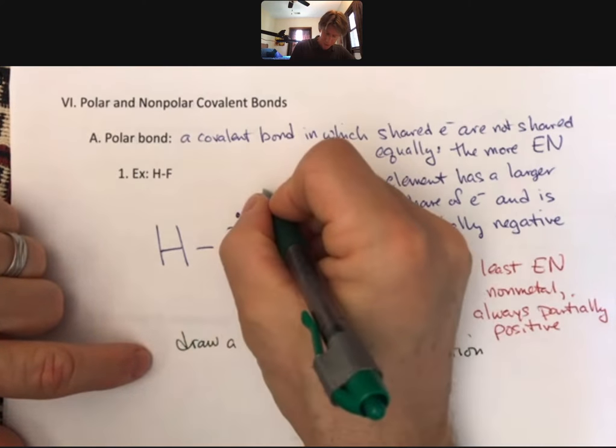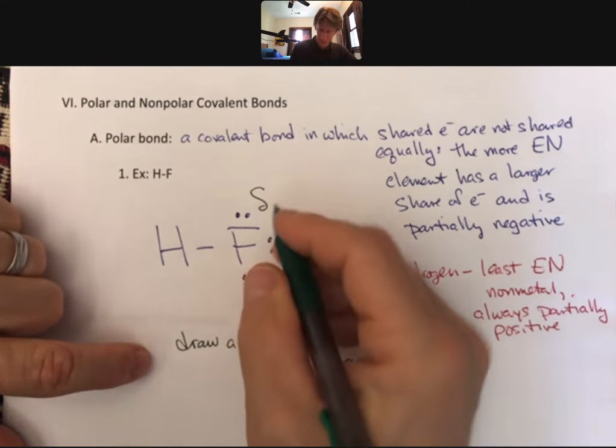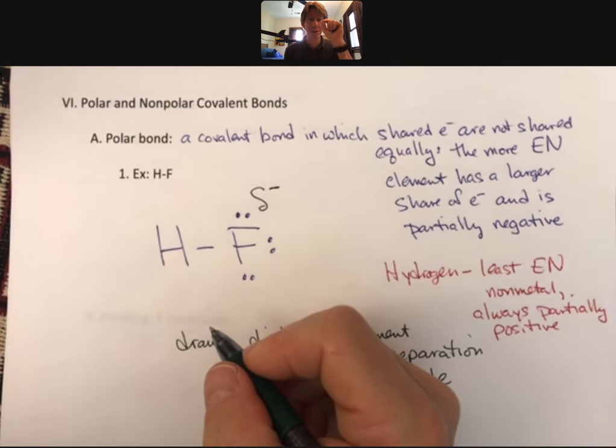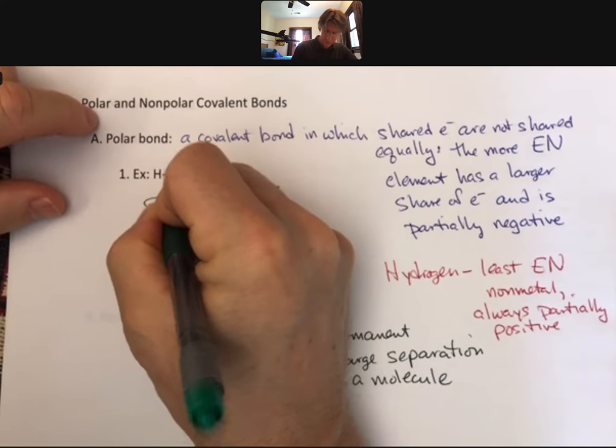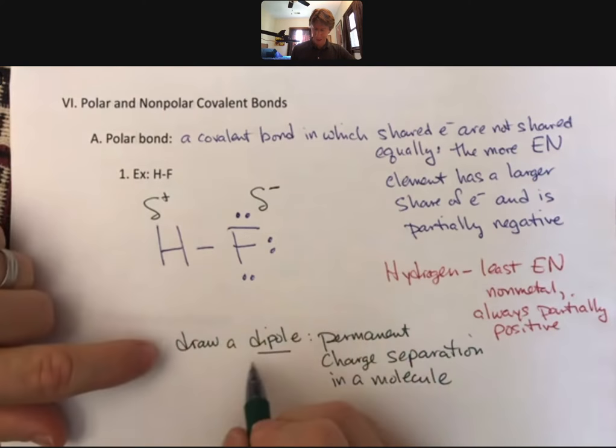To do that, I'm going to draw what amounts to a lowercase Greek letter delta, that's like a squiggly D there. Delta means partial. Partial negative, partial positive for the hydrogen. And that is a dipole.